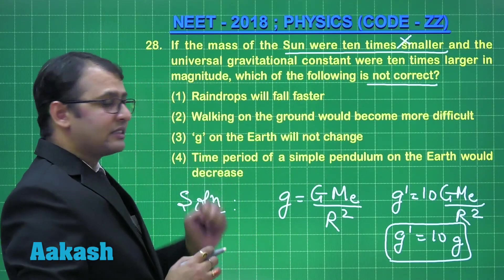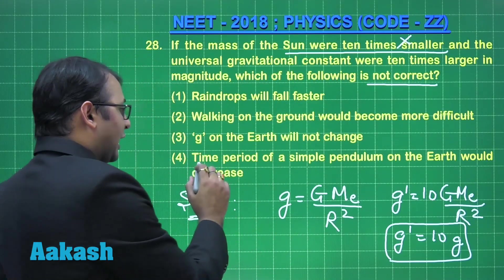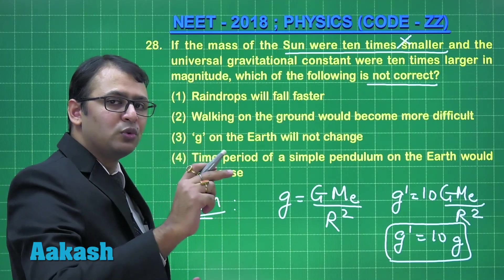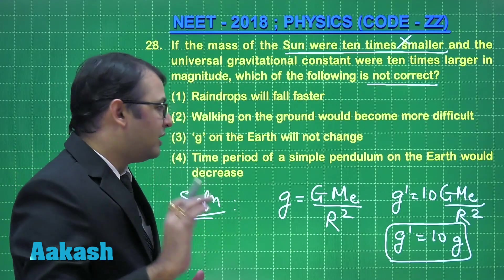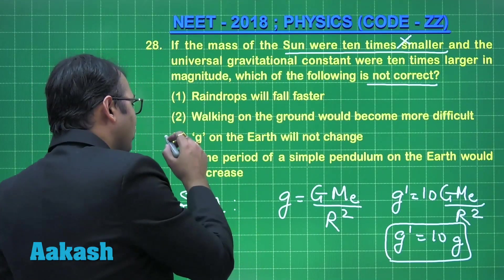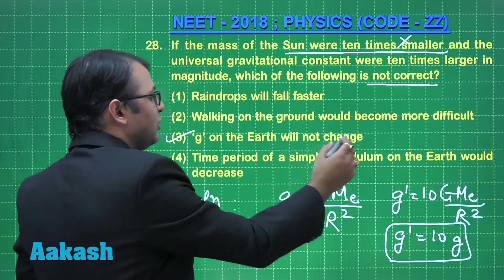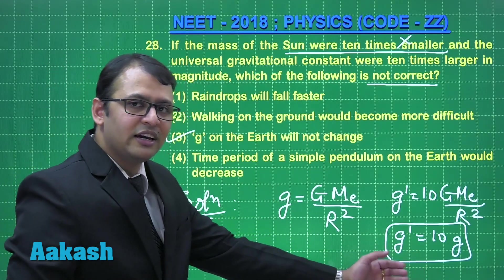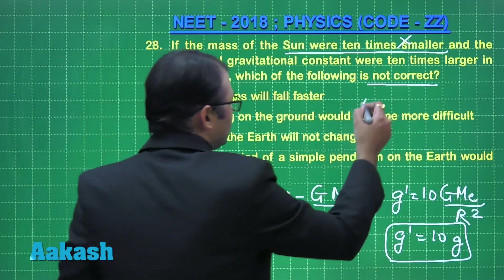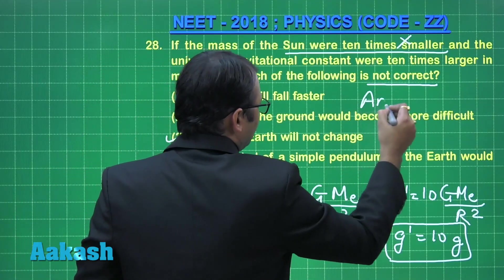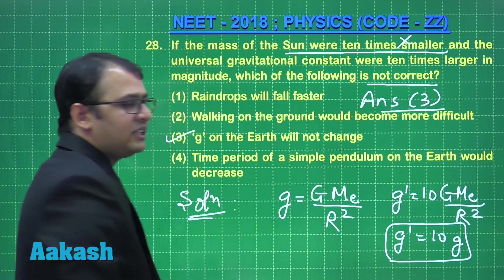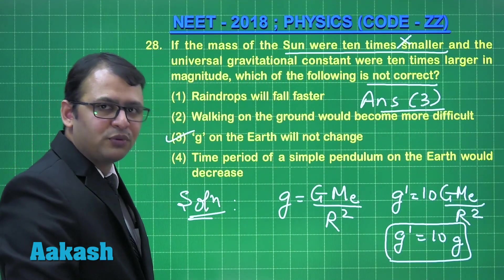The time period of a simple pendulum on Earth would decrease — yes, because T = 2π√(L/g), and g has increased. The incorrect statement is option 3, which claims that g on Earth will not change — but it has changed, it has become 10 times larger. So the correct answer to this question is option 3.